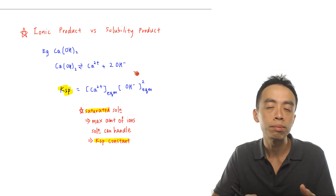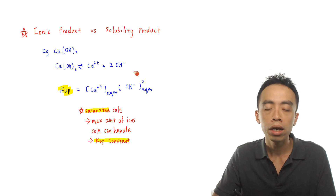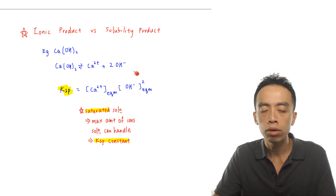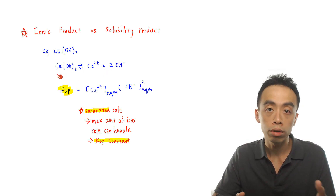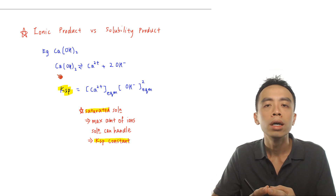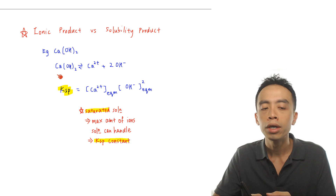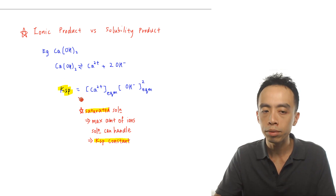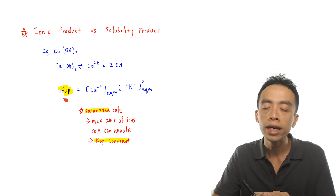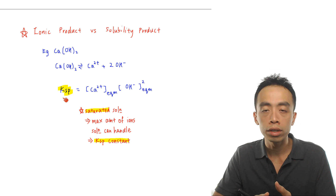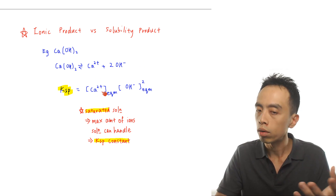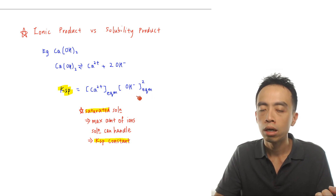For an equilibrium constant, we need to divide by the concentration of the reactant raised to the power of the coefficient. But for the dissociation of a sparingly soluble salt, the reactant is always a solid, so the concentration of the solid is a constant term and it doesn't appear in the Kc or Ksp expression — rather it is absorbed into the Ksp constant. So Ksp is just the concentration of the ions raised to the power of the coefficient: [Ca²⁺]¹ × [OH⁻]².